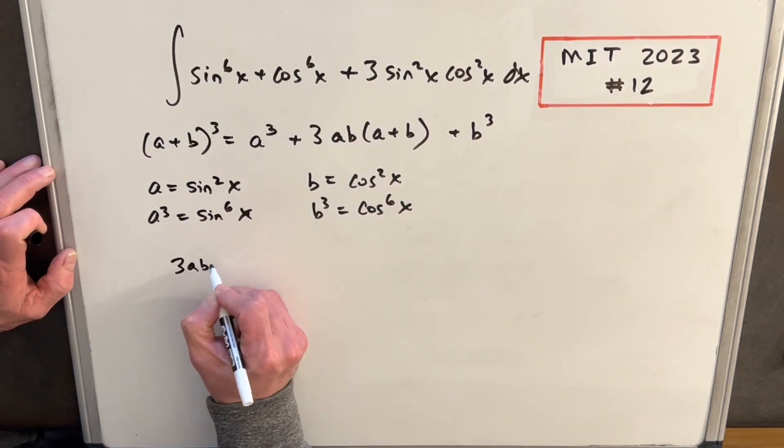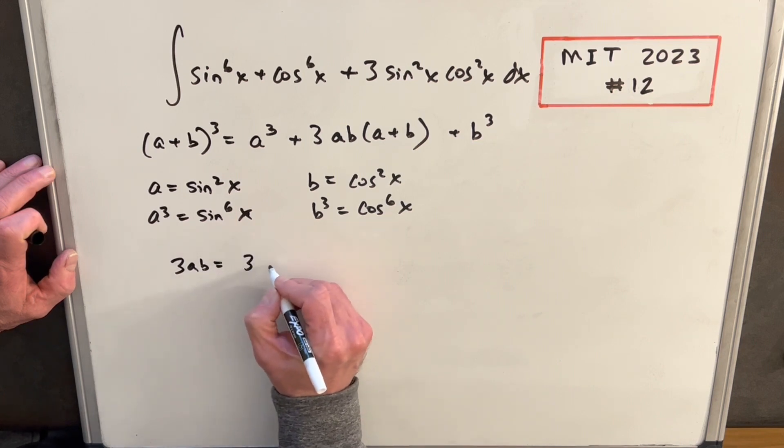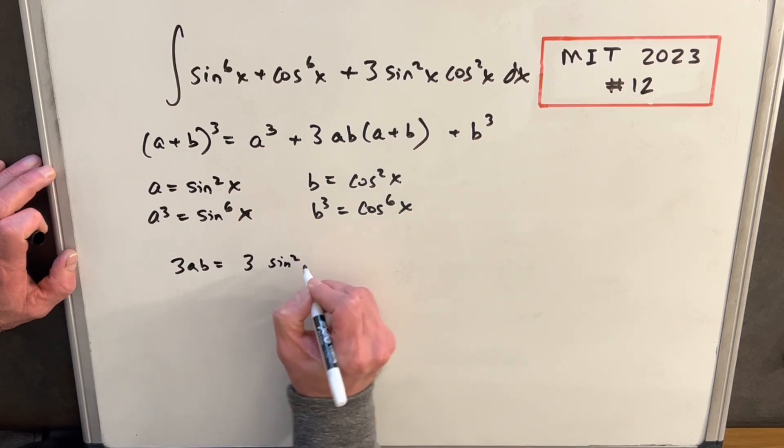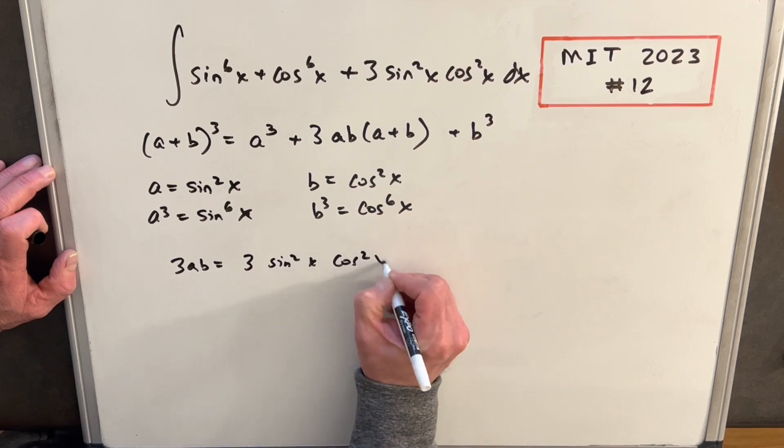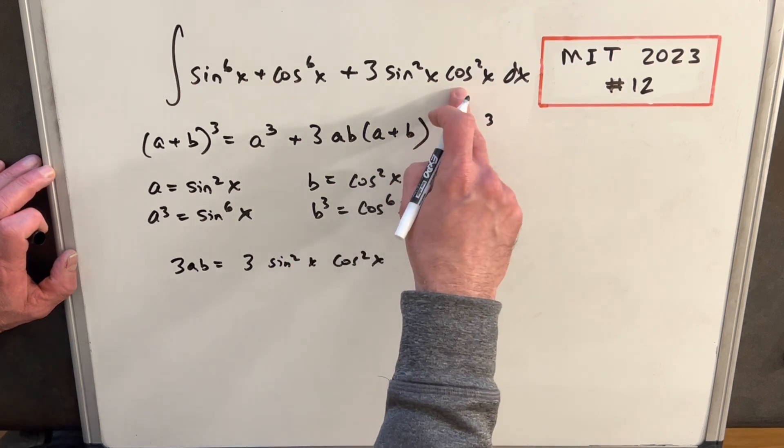So then let's look at 3ab. So 3ab is going to be 3 sine squared x cosine squared x. That's exactly what we have there.